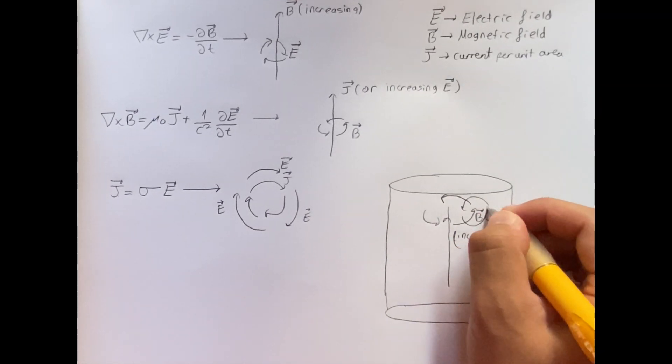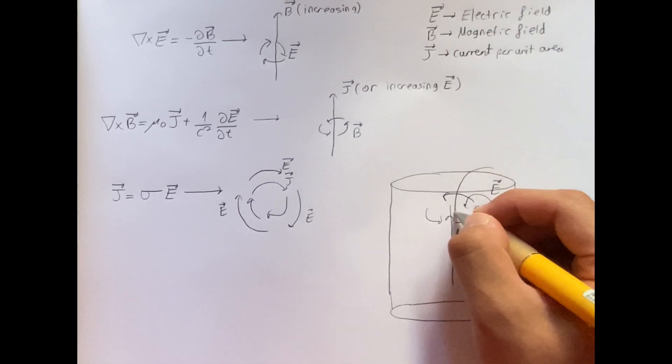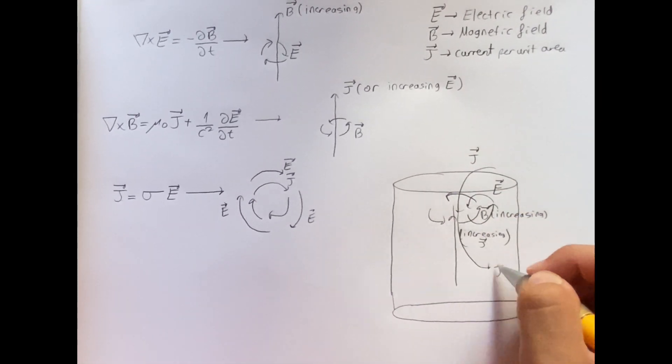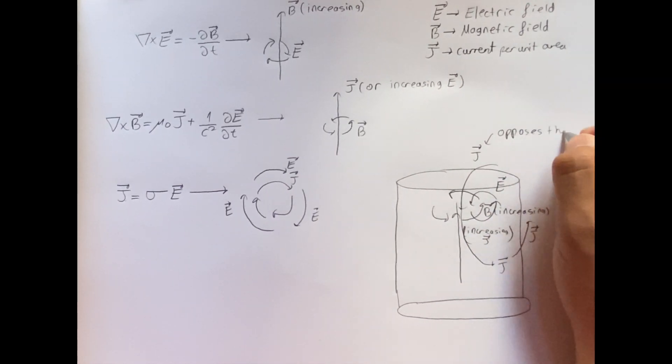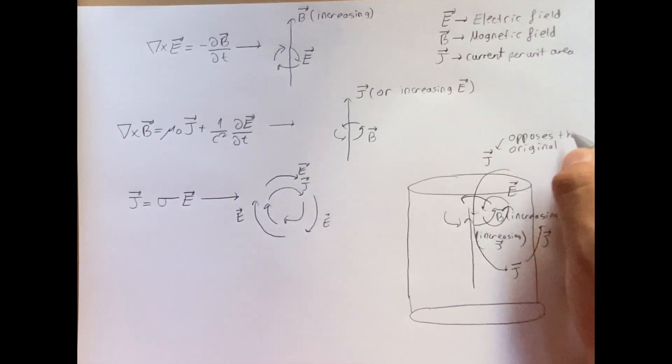When current increases, magnetic field increases and it induces an electric field which puts electrons into motion and creates a current opposing the original current. Hence, towards the center, the current decreases.